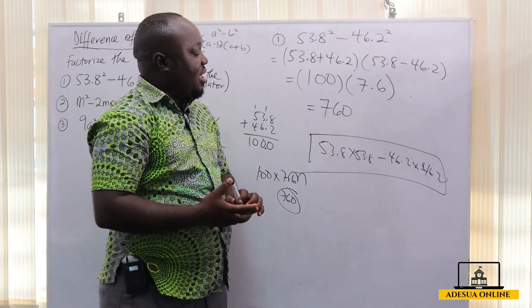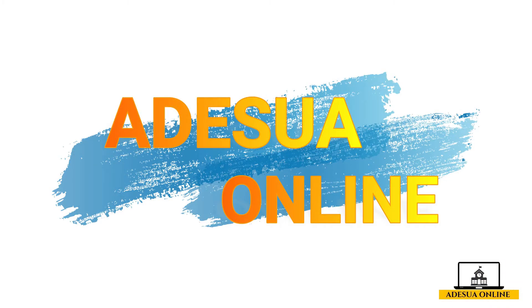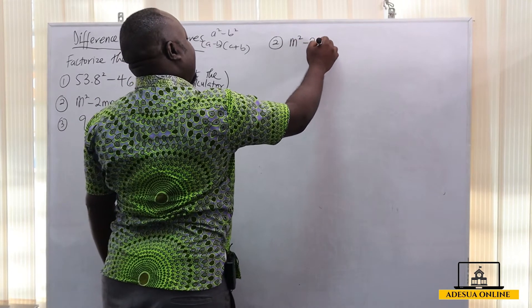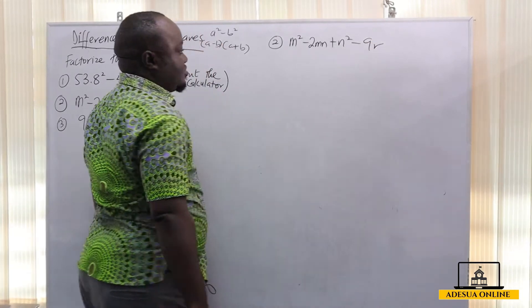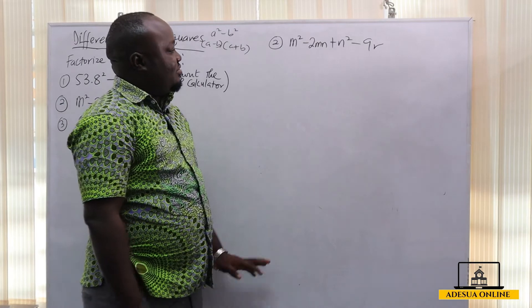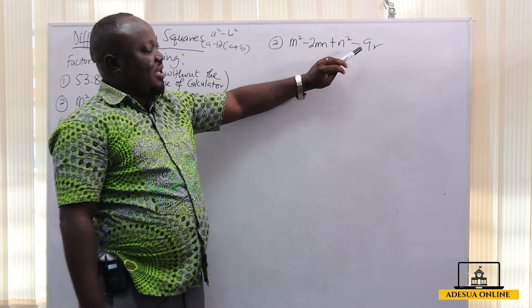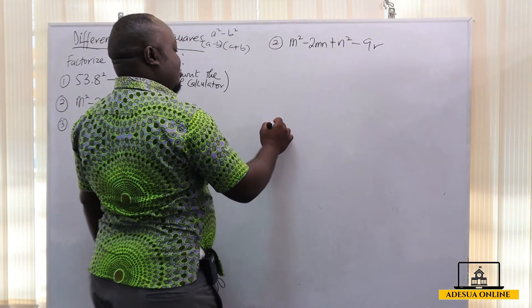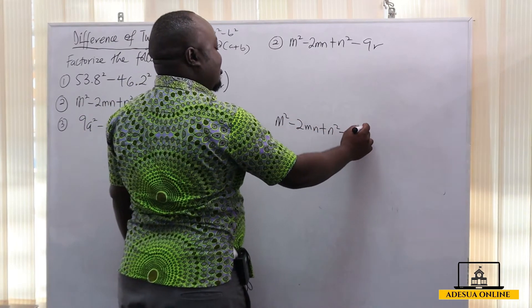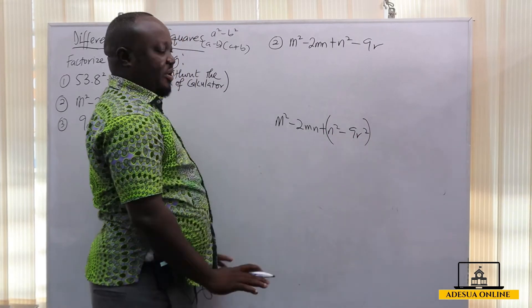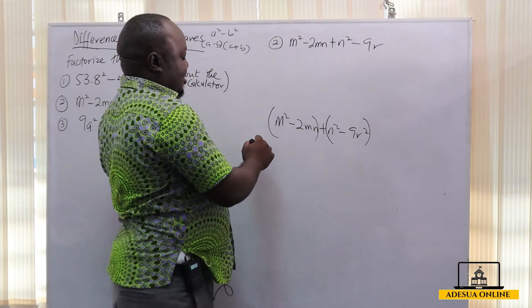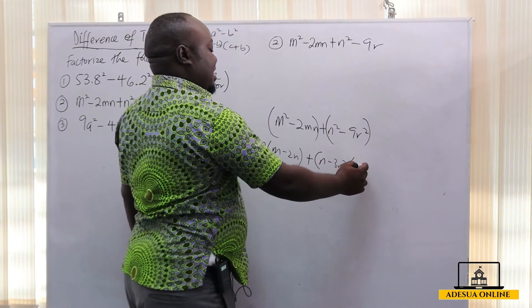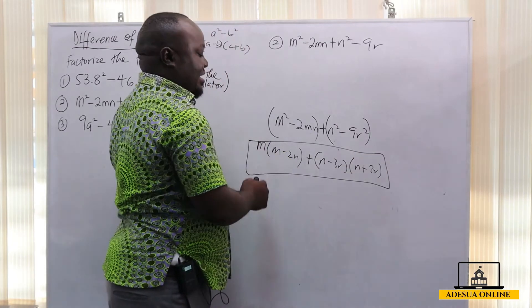In the next example, number two: we have m² - 2mn + n² - 9r². Now we realize that we have m² - 2mn + n² - 9r². One might try to factorize this directly as (m - n)(m + n) minus (3r)(something), but after expressing the difference of two squares that way, there is nothing that can factorize again, which makes this approach wrong.